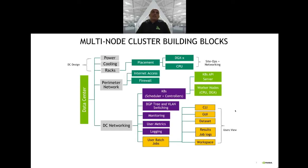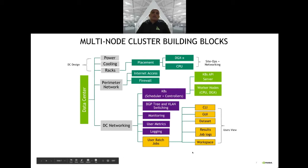In a multi-node cluster, the building blocks moving from left to right are: data center, power cooling racks, and placement of DGX and CPU nodes — typically handled by site ops and the networking team. There is a perimeter network and a core network with a K8S and BGP layout in the switching, along with VLANs at the lower end. Monitoring, metrics, and logging are associated with both networks and user jobs. Users interact through CLI and GUI to launch container jobs, and the K8S API server controls the worker nodes.